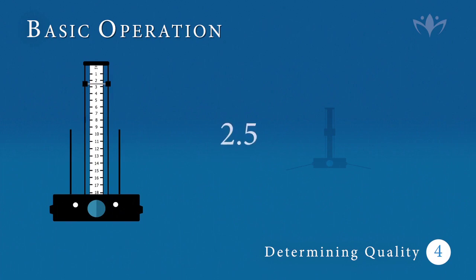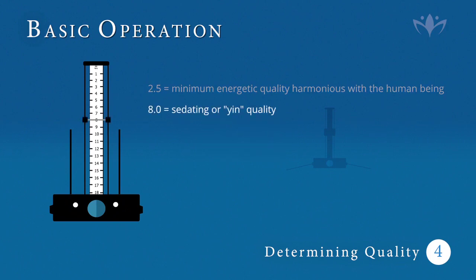Place the shorting bar at 2.5. This denotes the minimum required energetic quality of an object to be harmonious with the human being. Any item or substance from wristwatches to cell phones, foods, medications, or household cosmetics that do not respond to 2.5 are potentially harmful. Eight correlates to the presence of a sedating or yin quality, while 12 relates to an excitatory or yang quality. 15.3 denotes a balanced substance containing both yin and yang qualities, the synergistic effect resulting in a product that is radiating or very positive.